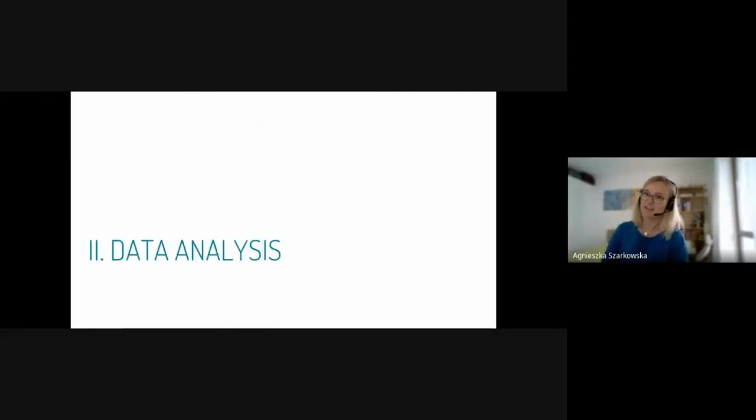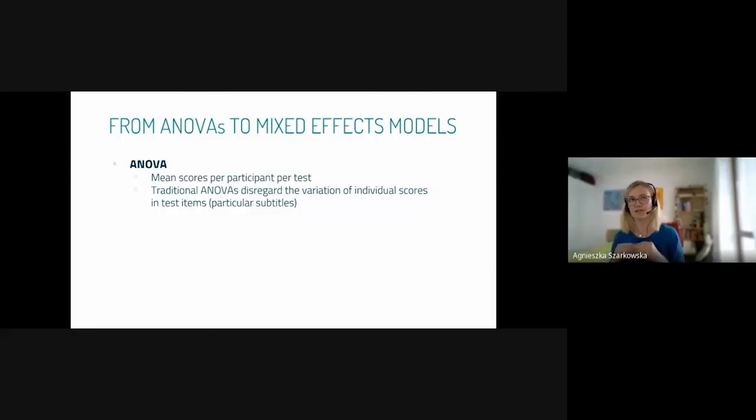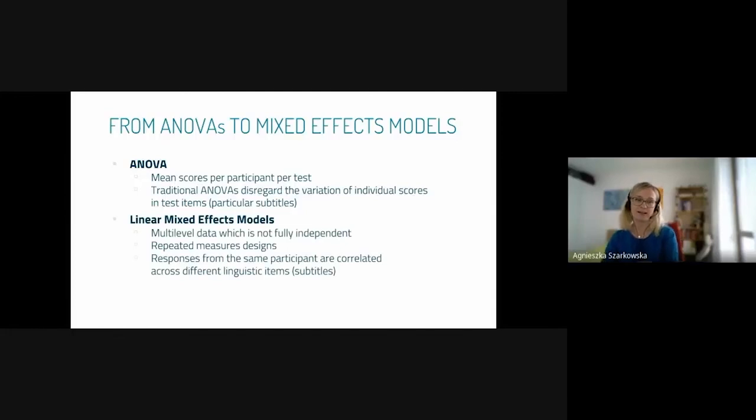When it comes to data analysis, I think we need to move from ANOVA tests to more complex models. In ANOVAs, we tend to calculate averages for all subjects. For instance, when testing subtitling in eye tracking, you have one value for all the subtitles per clip per participant. So you're reducing a lot of data and losing a lot of information, whereas mixed models take into consideration the fact that your data is not independent and it's repeated measures design and the data is correlated.